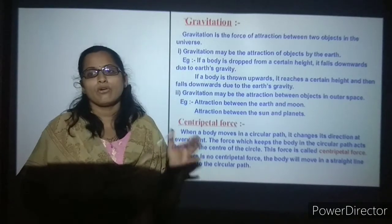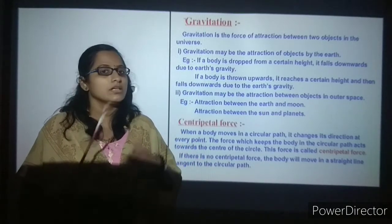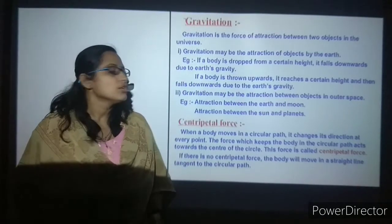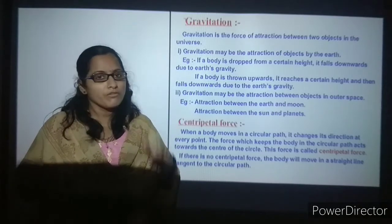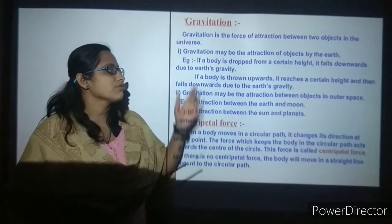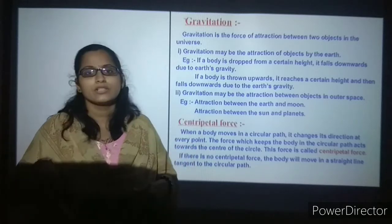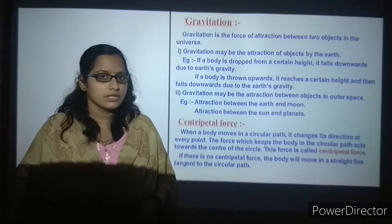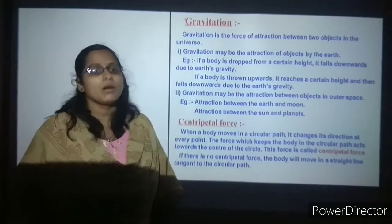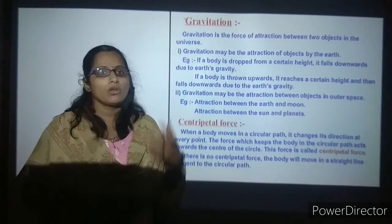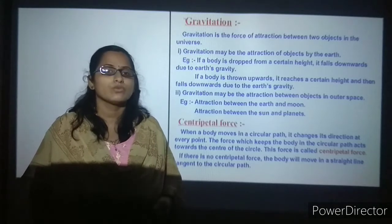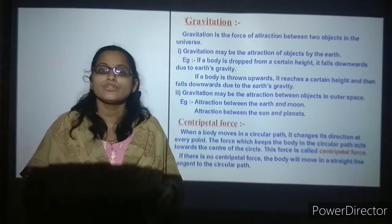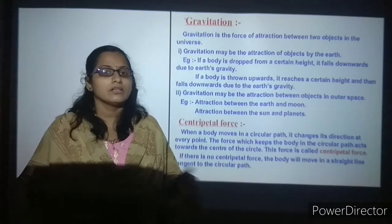Gravitation is the attraction of objects by the earth. So earth pulls objects towards it, that is known as gravitation. You can imagine dropping a ball from a height — it falls downwards due to earth's gravity because earth pulls it towards it. If a body is thrown upwards, after some time it will come down. It reaches a certain height and falls again towards the earth by earth's gravity.